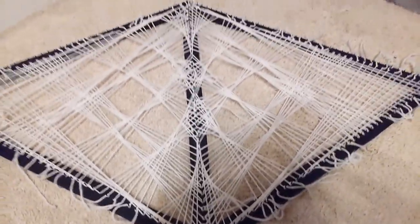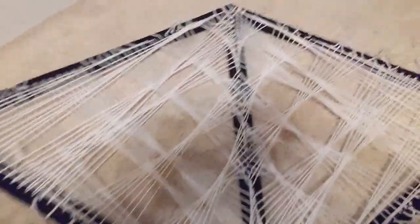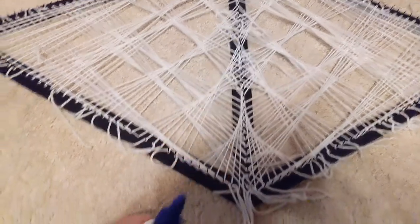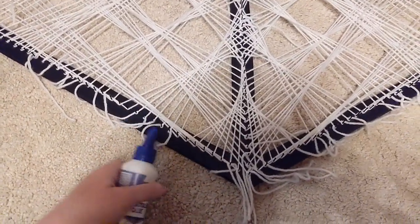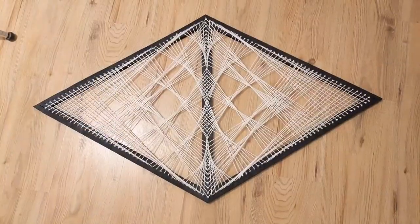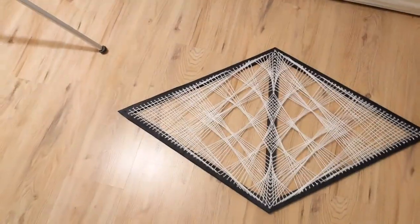I might secure the knots with a little bit of glue. I have this textile glue, and when I don't trust a knot I will put a little bit of glue on there. Here comes the exciting part, let's turn off the light.